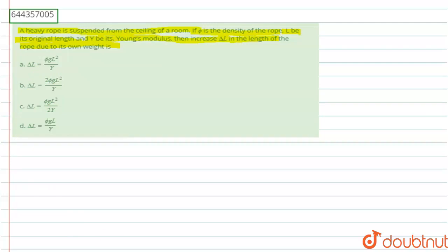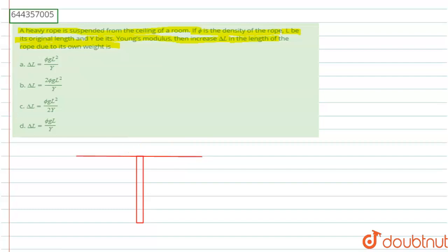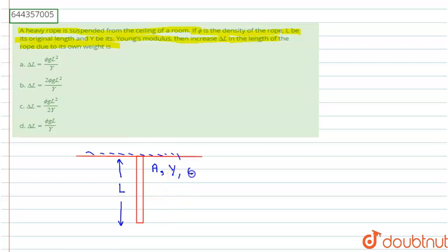Let us consider this is the rod suspended with the ceiling. The length of this rod is L, cross-sectional area is A, and the Young's modulus is Y. Density is phi. Now let us consider an elementary portion — a small element of this rod. This element has length dx, and it is at distance x from the bottom.